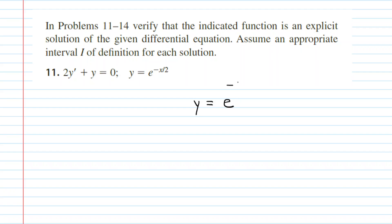Let's write our solution first. We have y = e to the power of negative x over 2. We can write that as e^(-1/2 x). Then we need to compute the derivative.